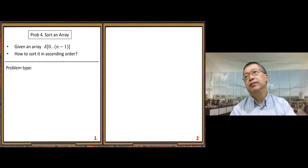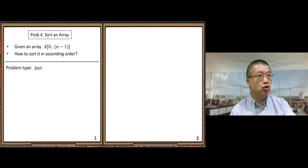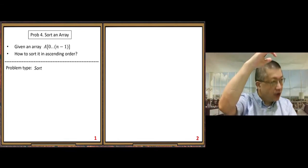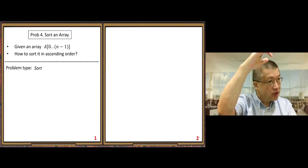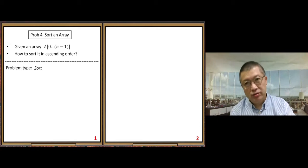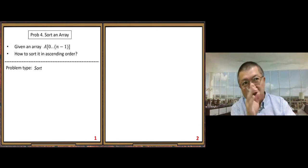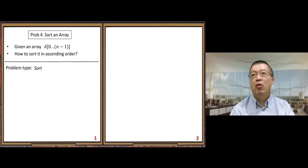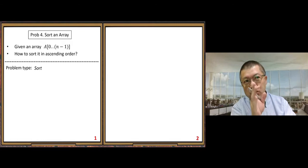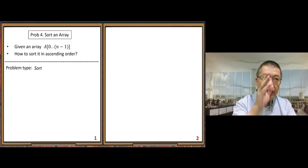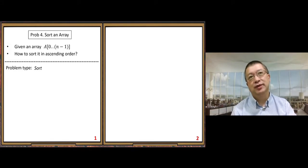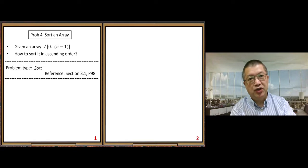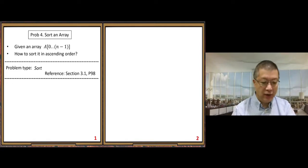So let's start with the problem itself. The problem type: sort. Remember, I mentioned three basic problem types. First one: search, right? Second one: selection problem. Here, selection sort. Selection problem, different. Do not get confused. The second type is selection problem. The third one is sort. Here, the third type, sort. And we learn selection sort. So the selection problem and selection sort are two different things. The reference I'll give you in the textbook, the section page number here. You can study by yourself.